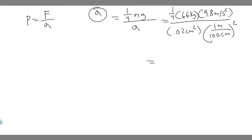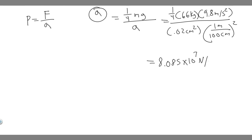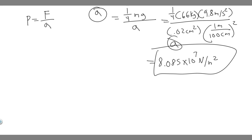Plug this into your calculator: do 0.25 times 66, multiply by 9.8, then divide by 0.02 times 1 over 10,000. When you do this, you get approximately 8.085 times 10 to the 7. The units are Newtons on top and meters squared on the bottom, so the answer for A is 8.085 × 10⁷ N/m².